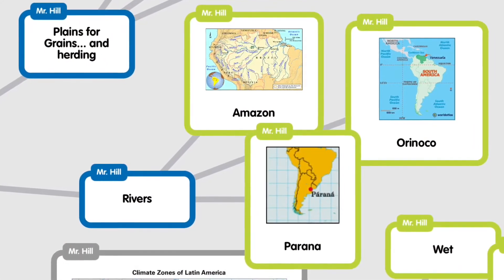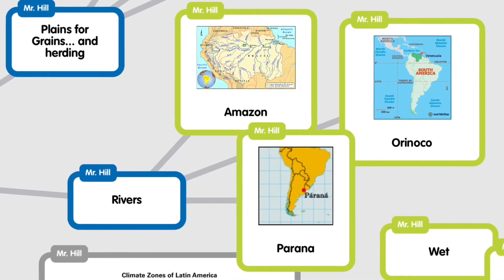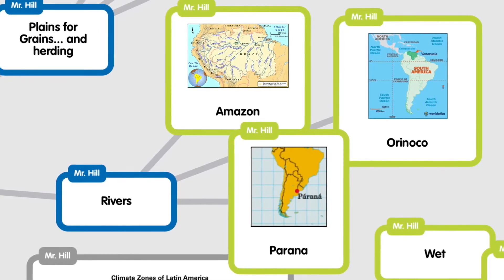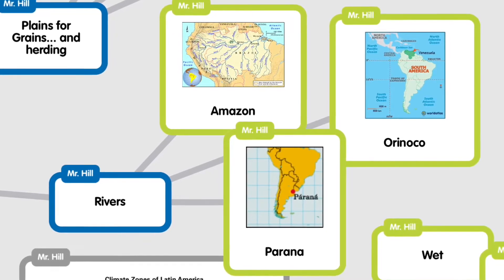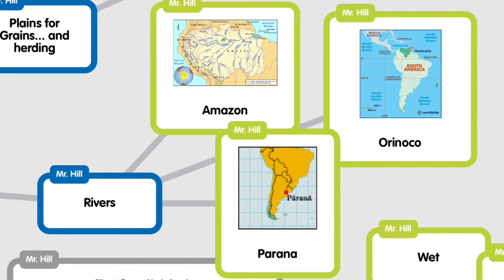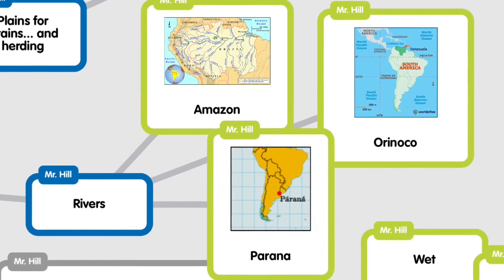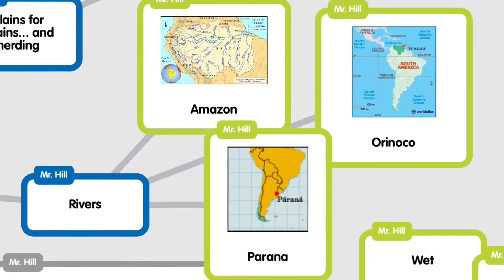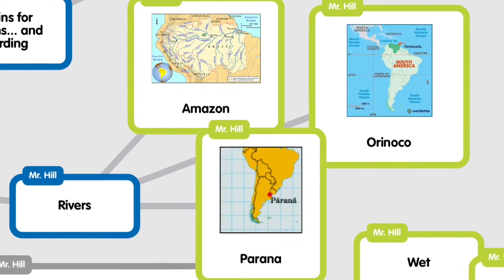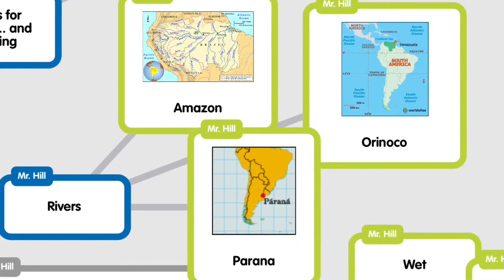Now, rivers. Number one, you have the Amazon River. This river runs 4,000 miles from west to east. It's fed by a thousand different tributaries and it carries more water to the ocean than the next seven largest rivers in the world combined. The next river is the Orinoco, found in the northern part of Venezuela, running 1,500 miles. Then the Parana, which runs 3,000 miles from south to west in the highlands of southern Brazil.